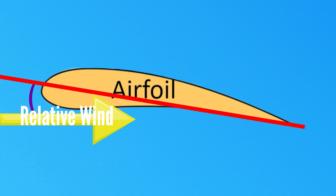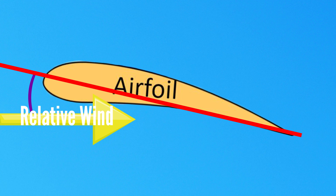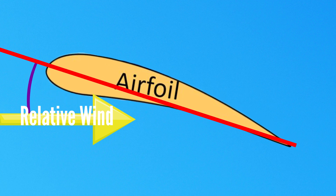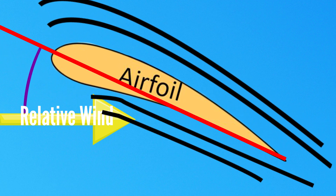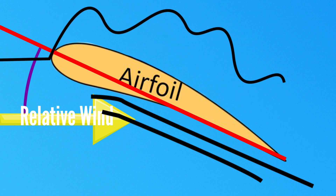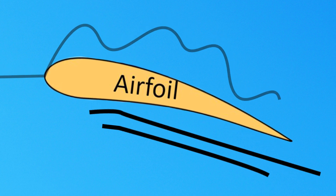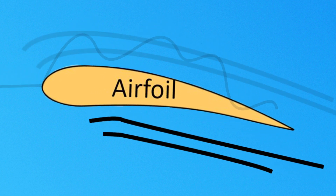As a pilot increases the angle of attack, the airfoil will increasingly generate lift until the critical angle of attack is exceeded. The air flowing over the upper camber of the wing begins to separate, causing the wing to stop generating lift and stall. To recover from a stall, the pilot must reduce the airfoil's angle of attack below the critical angle of attack so it will generate lift once again.